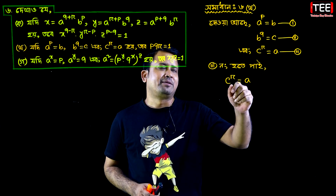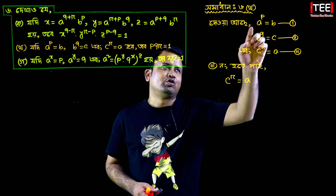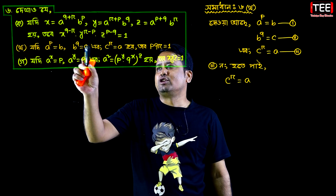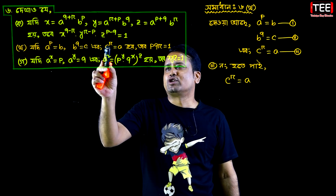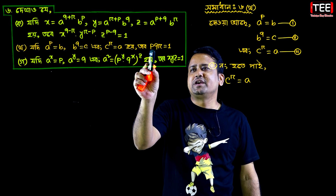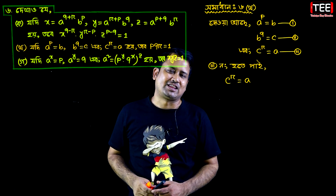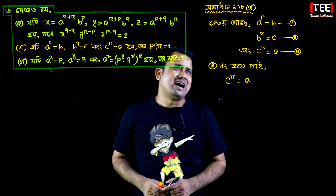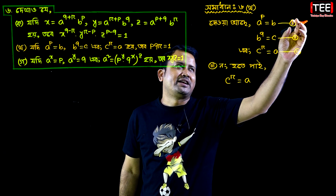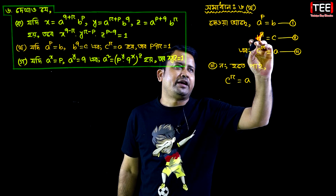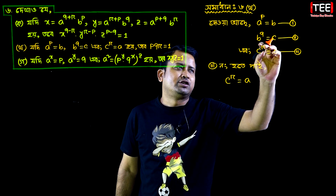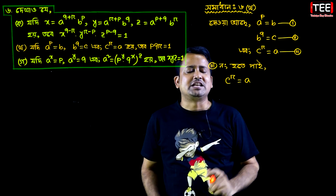Now, let's see. We have a to the power p equal to b — that's equation 1. B to the power q equal to c — that's equation 2. And c to the power r equal to a — that's equation 3. Then, pqr equal to 1 will be seen.